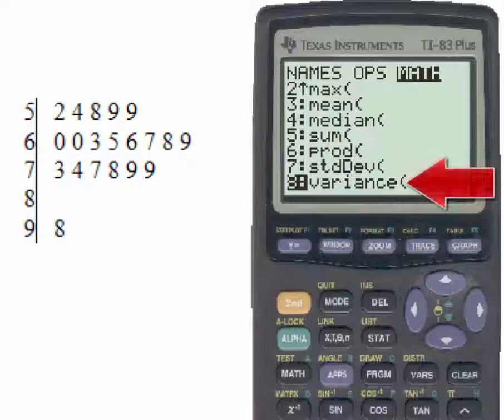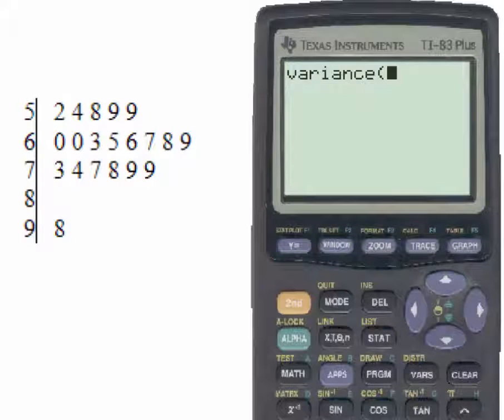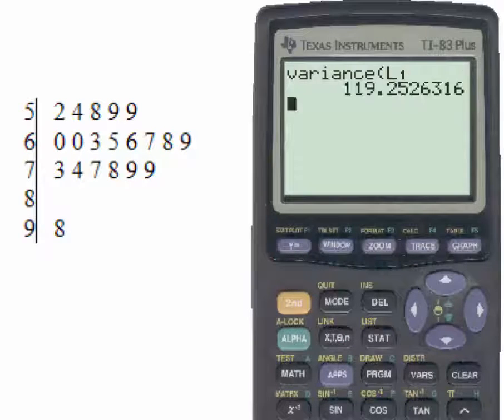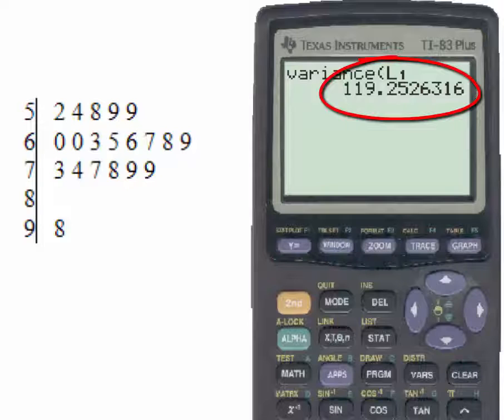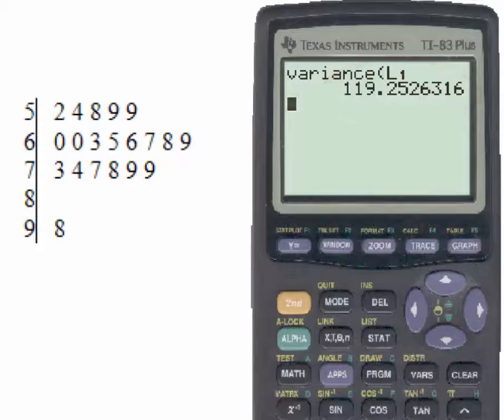Hitting the number eight and then putting in the L1 using the yellow second key and the number one and hitting enter, we have the variance. This number we might be asked to round off to the tenths place, hundredths place, thousandths place, etc. So that is how the TI-83 can be used to find some of the values that you'll be asked in the different questions about data sets.